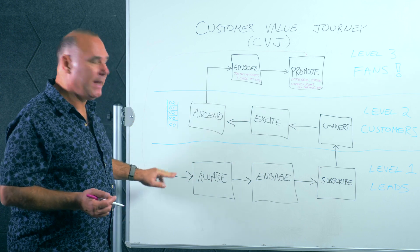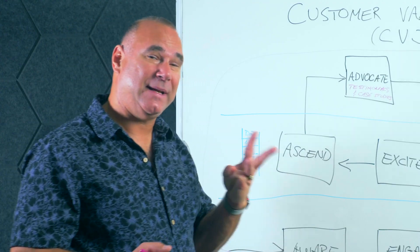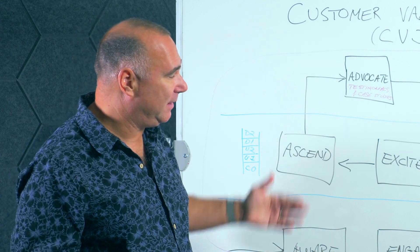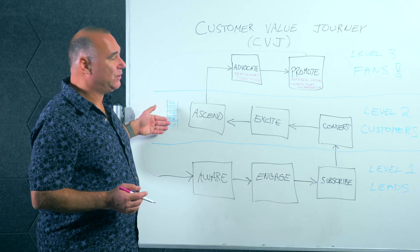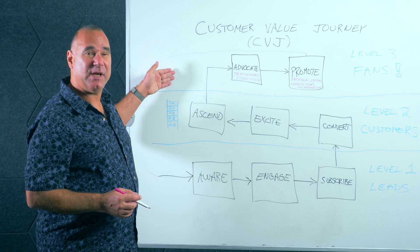Level 1: Leads. Level 2: Customers, which we covered in separate videos. And this one was all about generating Level 3: Fans. The CVJ is all about taking your prospects through an adventure.